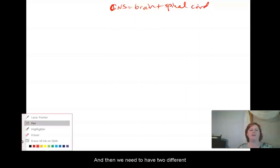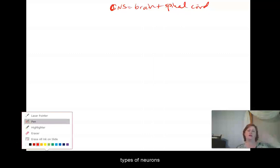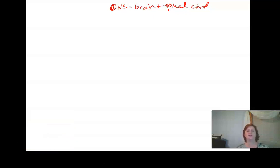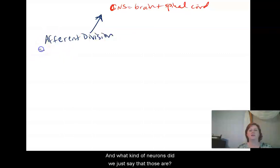And then we need to have two different types of neurons that are going to be carrying information to and from this central nervous system. We need to have neurons that are bringing information to the central nervous system. Those will be sensory neurons, and we need neurons that carry information in the form of commands away from the central nervous system, and those will be motor neurons. So let's talk about our incoming information first. This is going to be done by the afferent division, and what kind of neurons did we just say that those are? Right, those are sensory neurons.